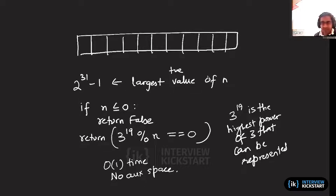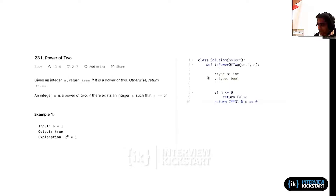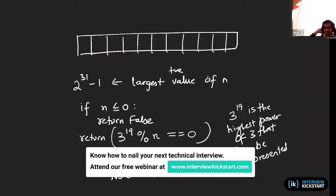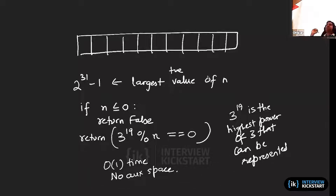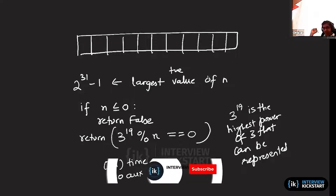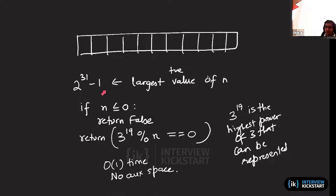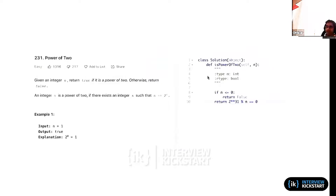You could ask: could I have done something like this even for the earlier problems? It turns out yes — at least for powers of 2 you could have done that. You could have computed which is the highest power of 2 that can be represented. Since 2^31 minus 1 is the highest positive value representable, 2 to the power 30 is the highest power of 2 that can be stored. So if you want to find whether a given number is a power of 2, you could take 2^30, compute the remainder when dividing by your number, and check if the answer is 0 — that also works.